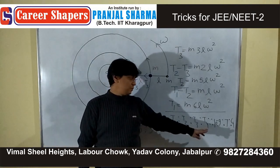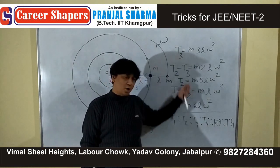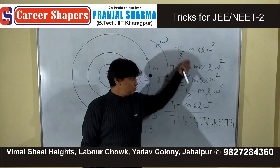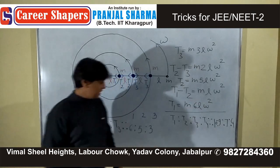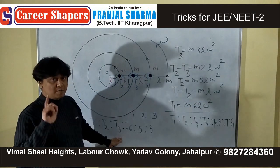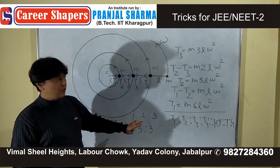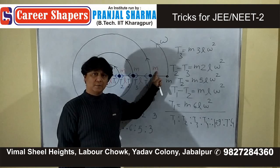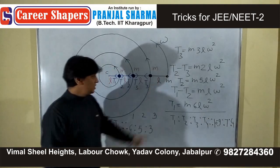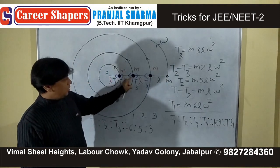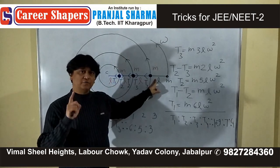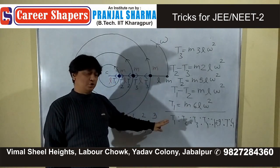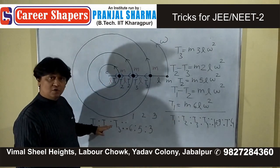In competitive examinations there is no need for the full proper method — you can directly use the trick. But remember, this trick is valid only when you have identical masses m, m, m and all ropes are of the same length l. Under those conditions you can find the tension ratio using this shortcut.